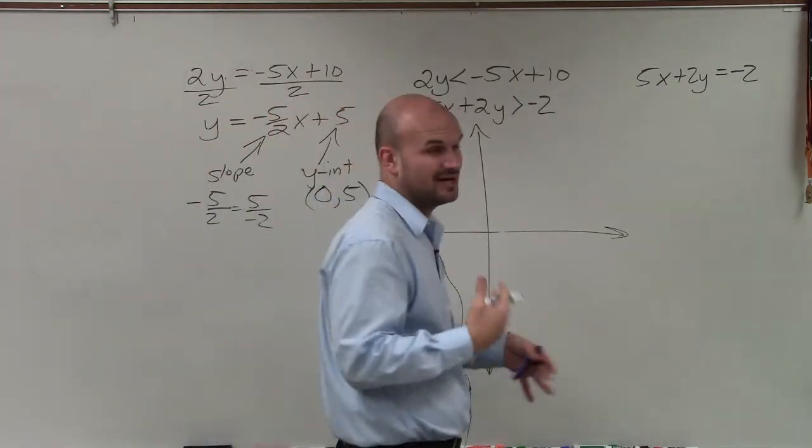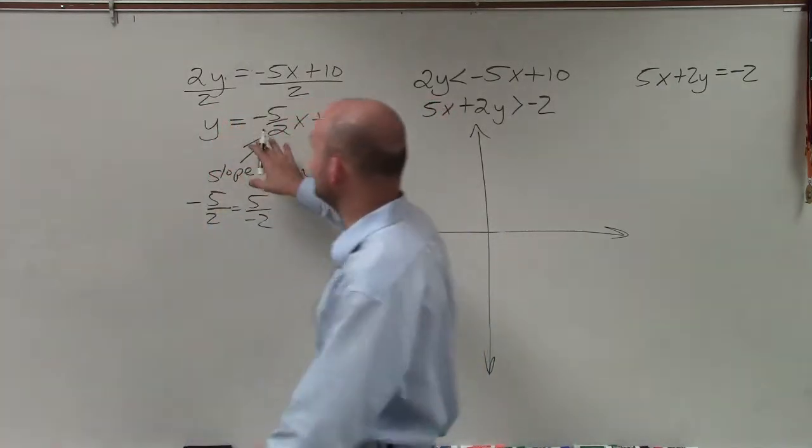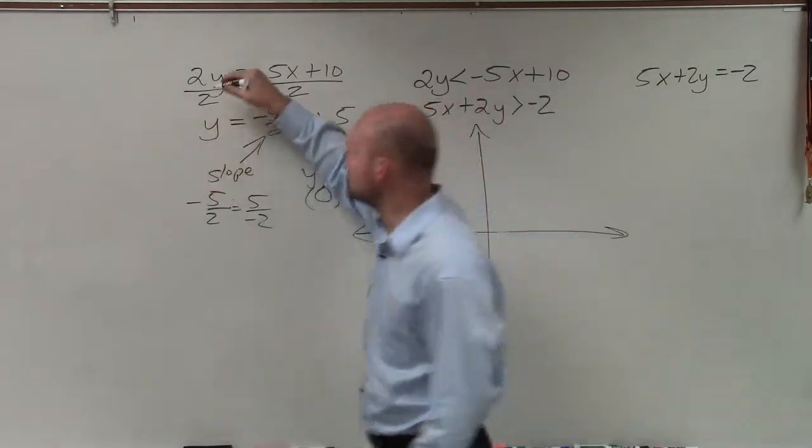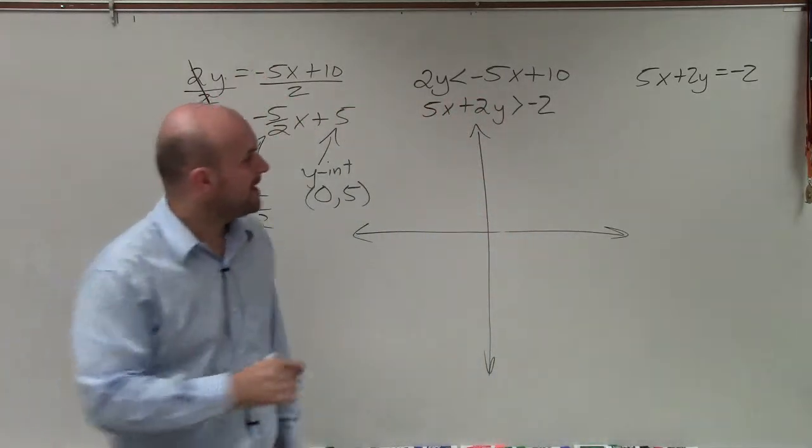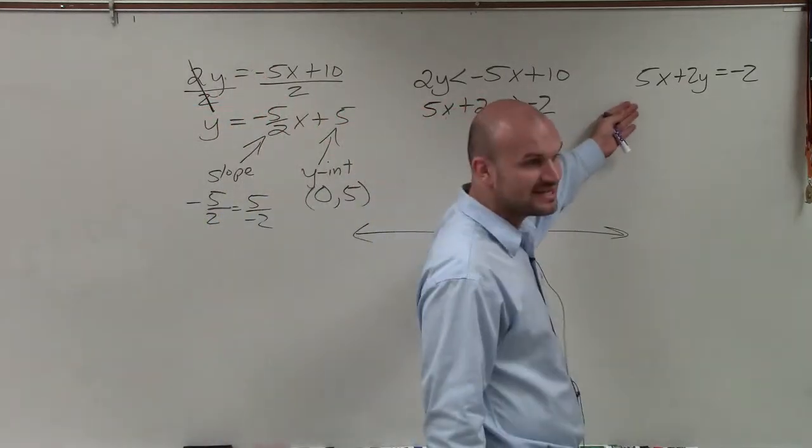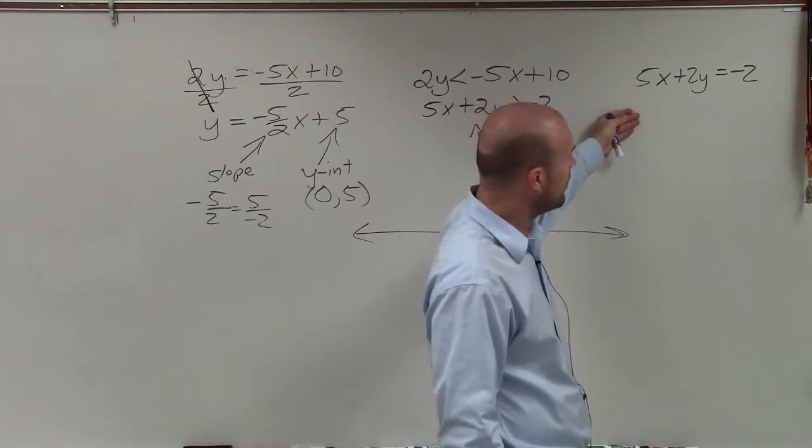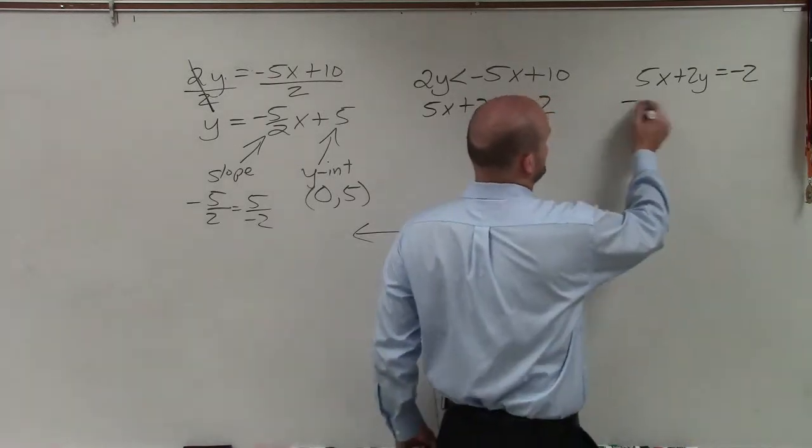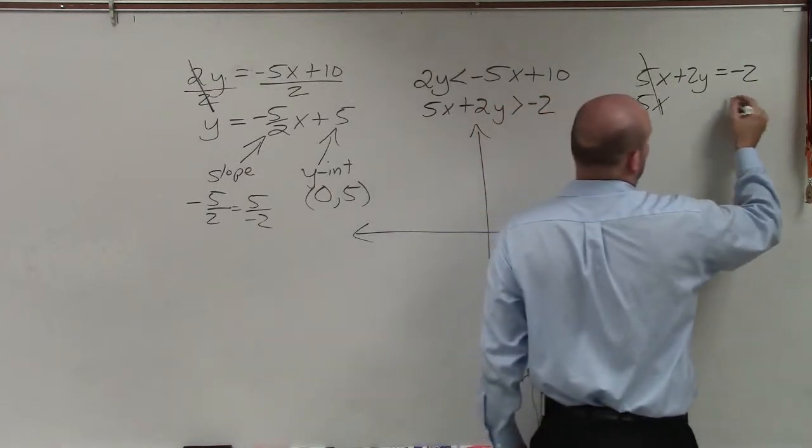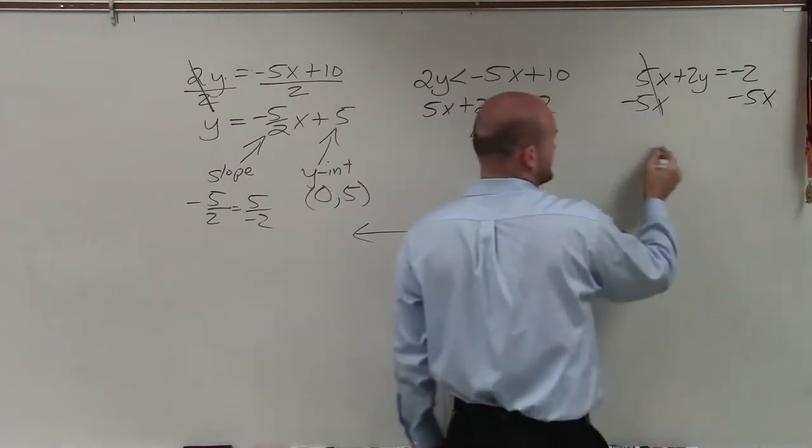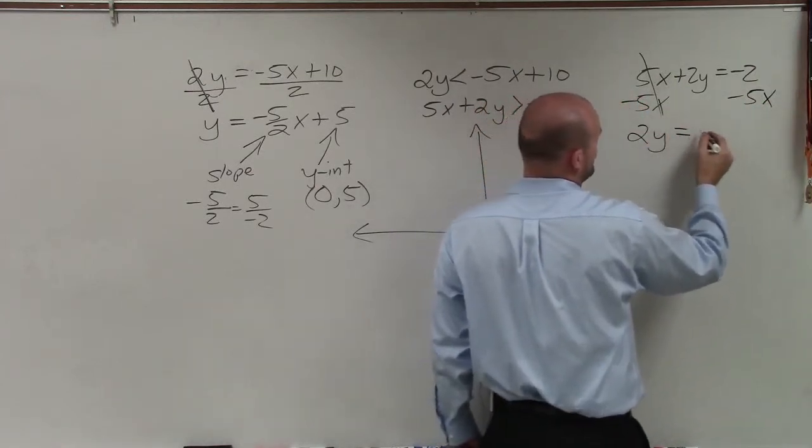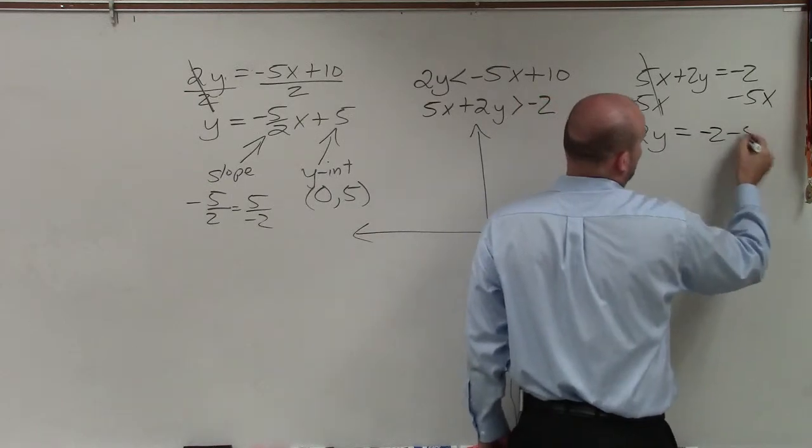Now let's get over to this one. Now this one's going to add a couple steps. The only thing that I need to do to isolate the y was to divide by 2 over here. But here, I have the 5x on the same side as a y as well. So the first thing I need to do is get rid of the negative 5x. So plus 5x minus 5x is going to go to 0. Now I'm left with 2y is equal to negative 2 minus 5x.